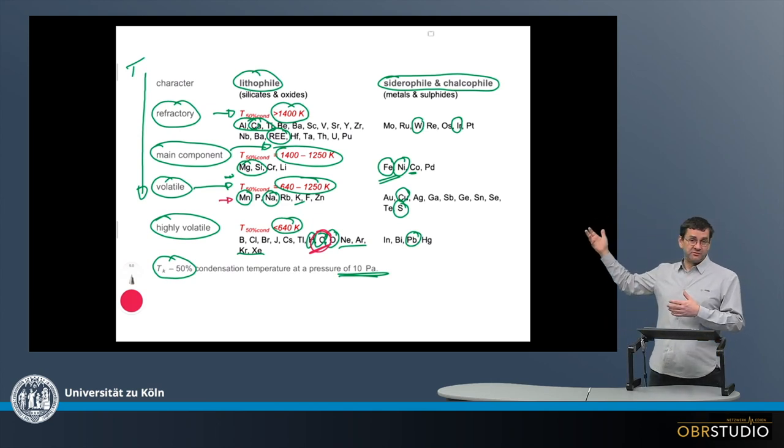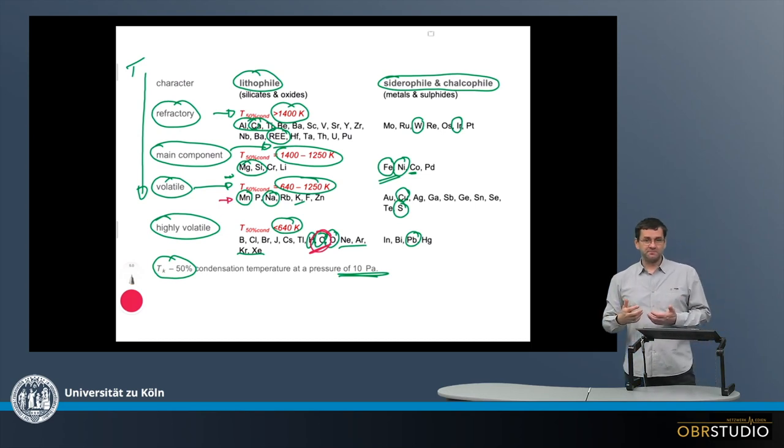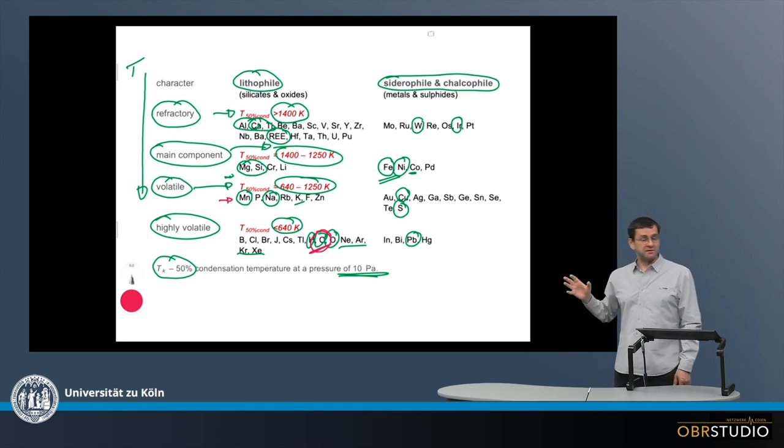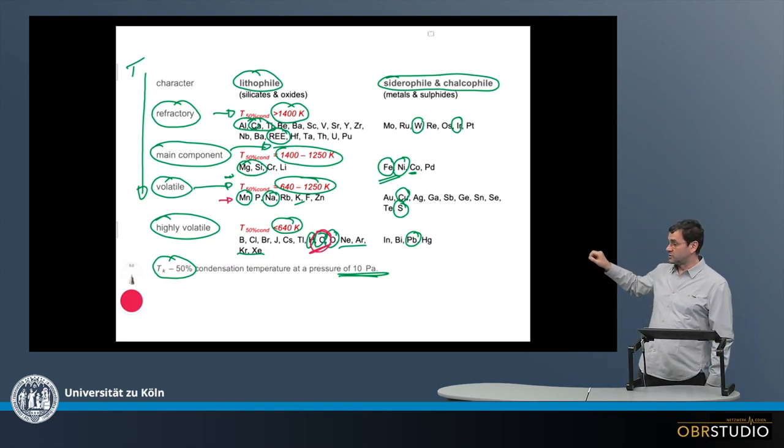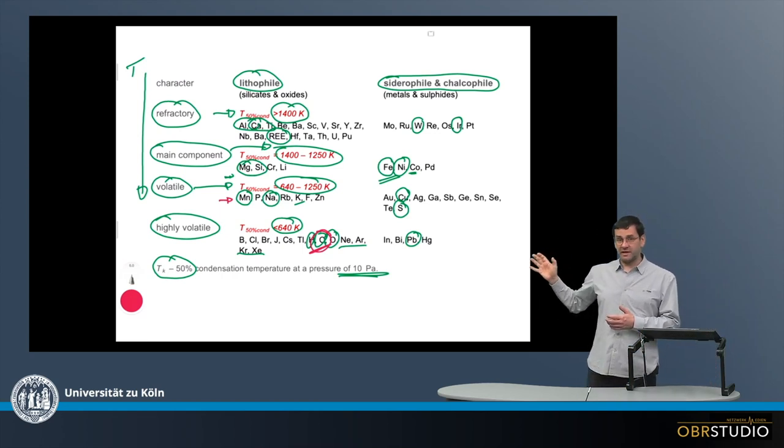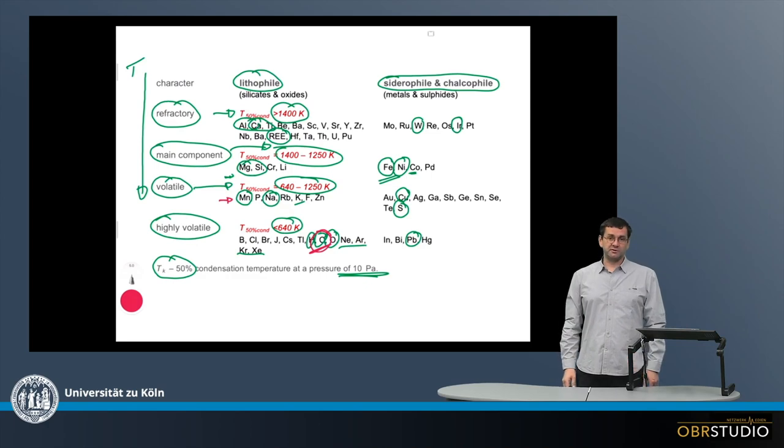We see that the refractory phases are the calcium aluminum-rich inclusions, the main components are in the olivine pyroxene and so on. This is why this concept here is of such high importance, and this is why it's important to remember this concept and sufficient to remember those elements that I just pointed out.